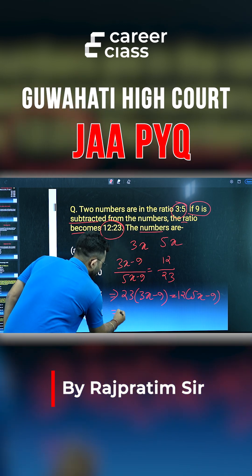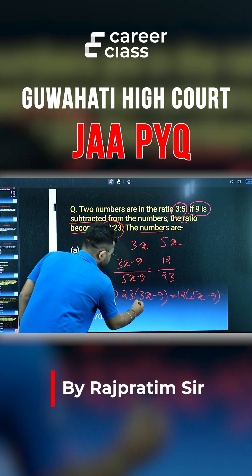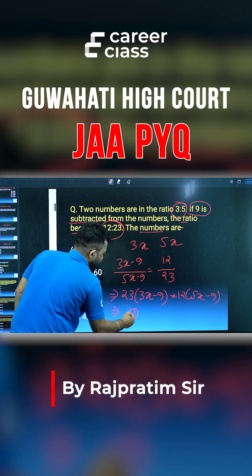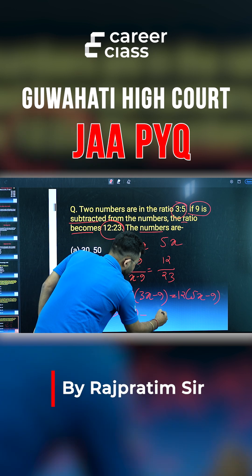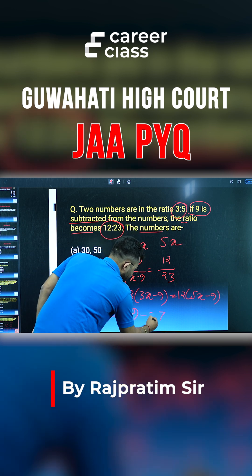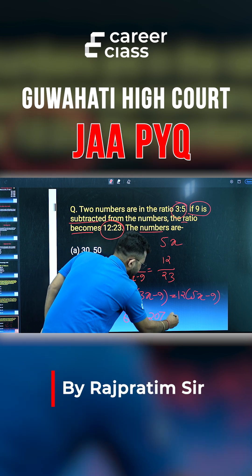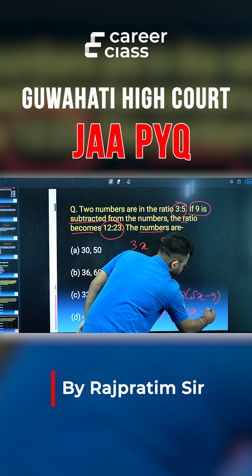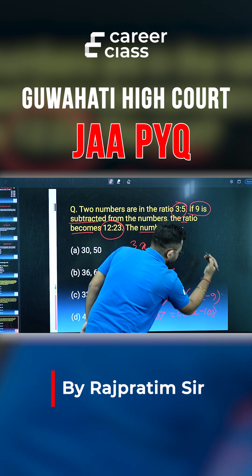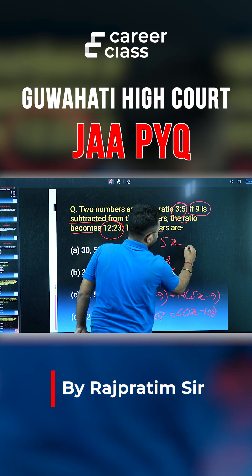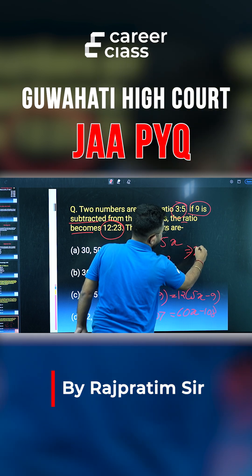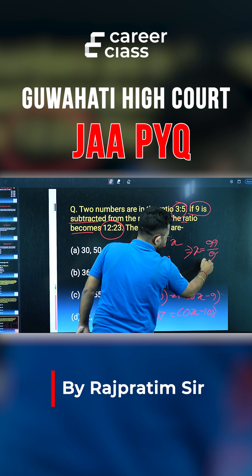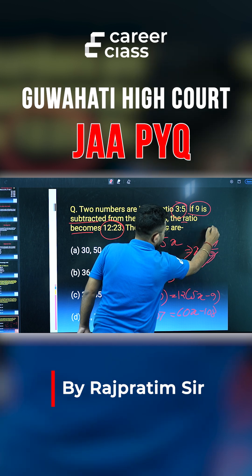Expanding: 69x minus 207 equals 60x minus 108. We need to simplify. x equals 99 by 9, which gives x equals 11.